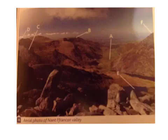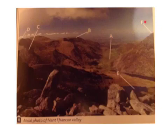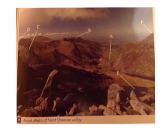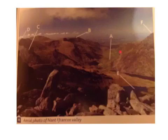Looking at this photo, there are labels a, b, c, d, e and f, and we need to work out what those different landforms are. If we look at landform A first, it looks like a valley floor — it is very wide and you can see a kind of U-shape, which gives this away as what we call a glacial trough.